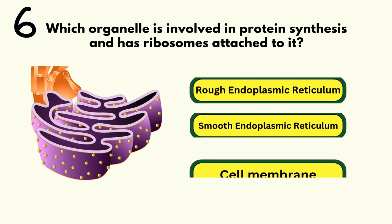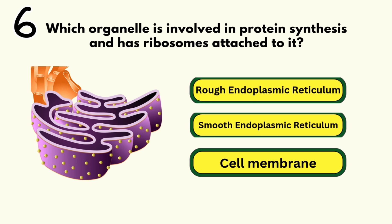Number 6. Which organelle is involved in protein synthesis and has ribosomes attached to it? Rough endoplasmic reticulum.